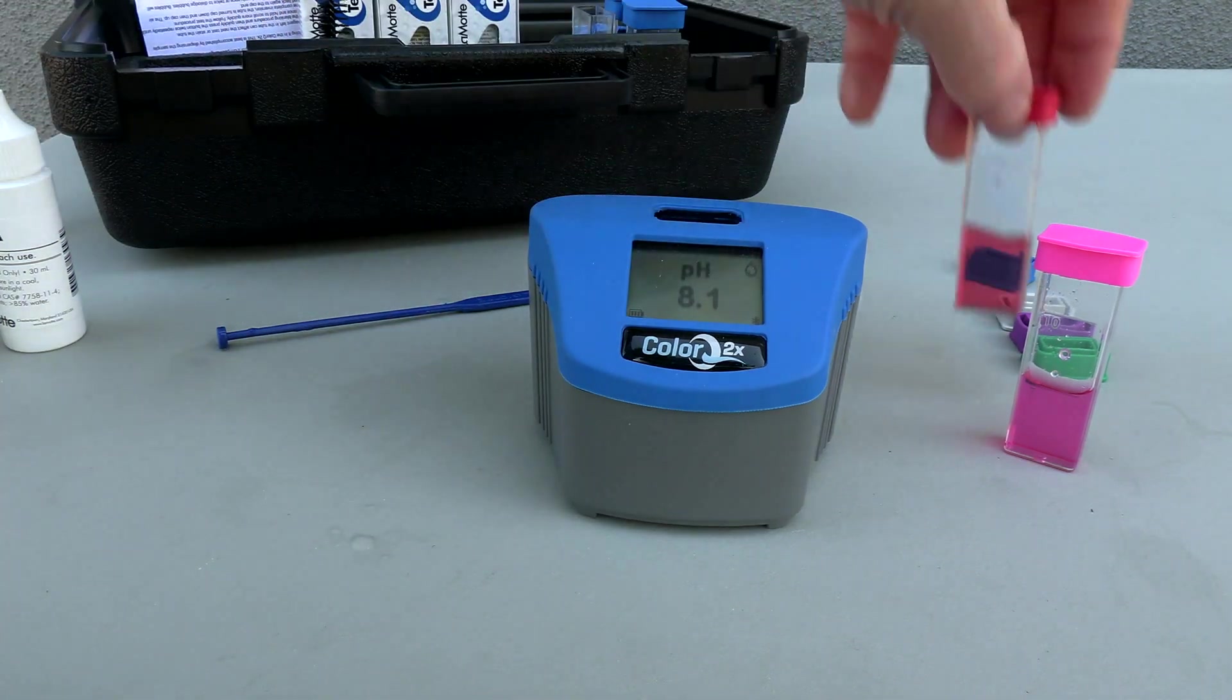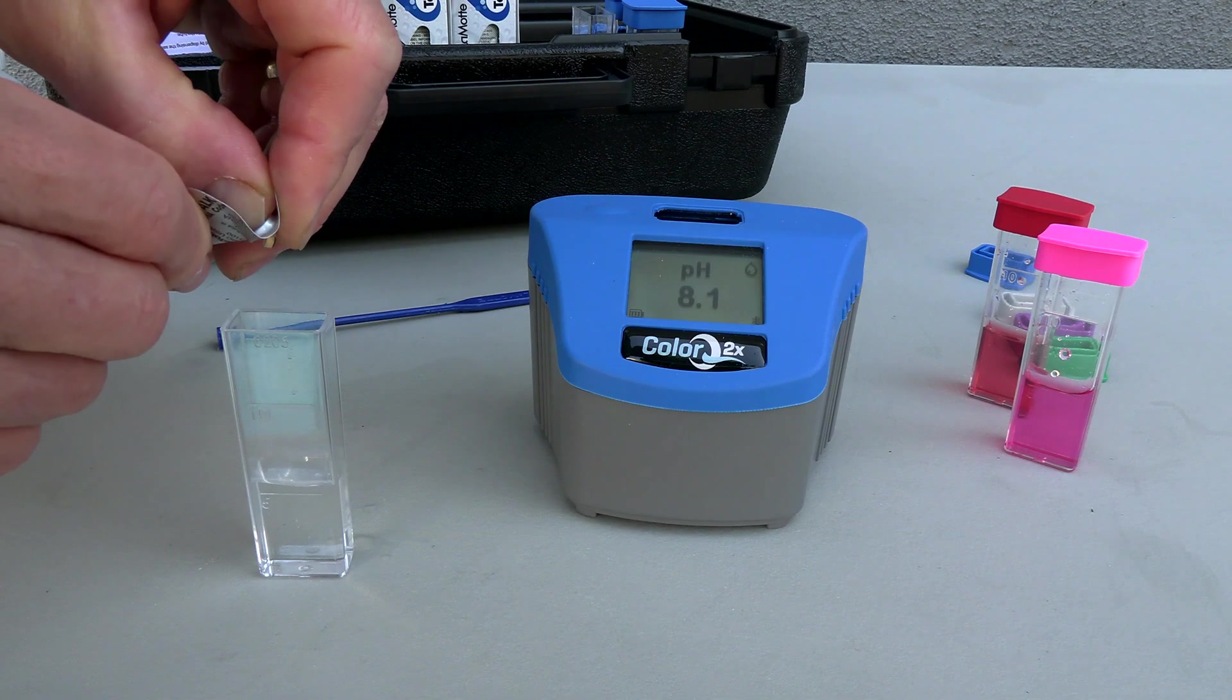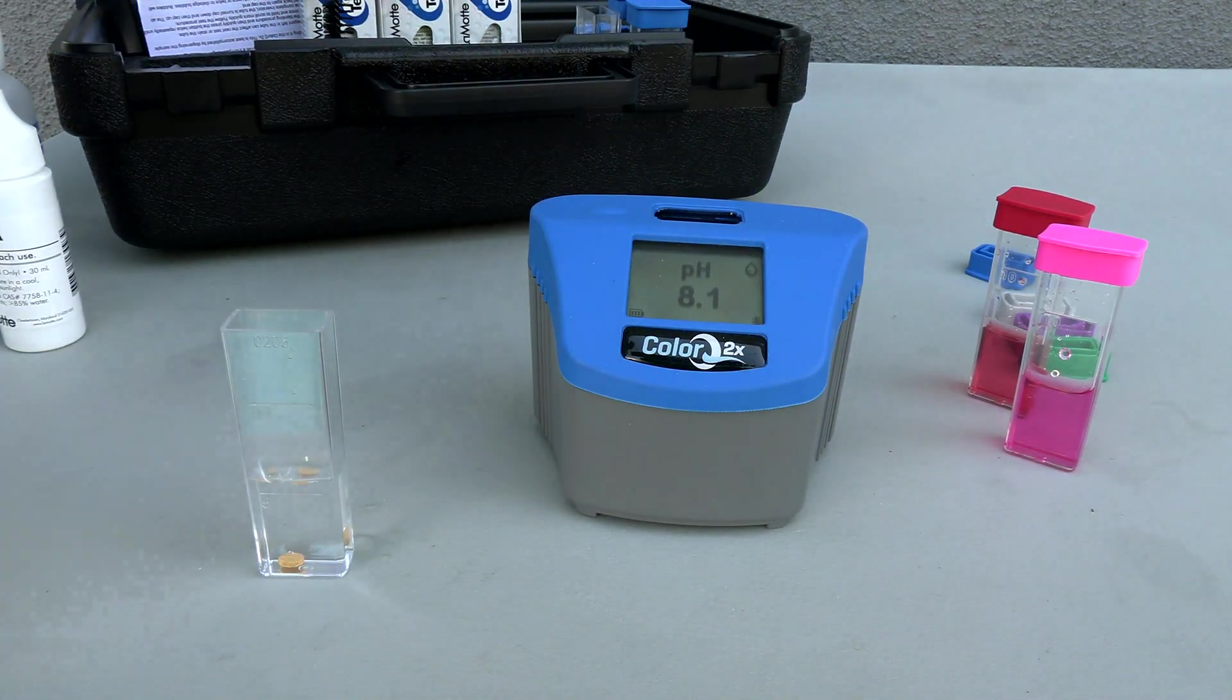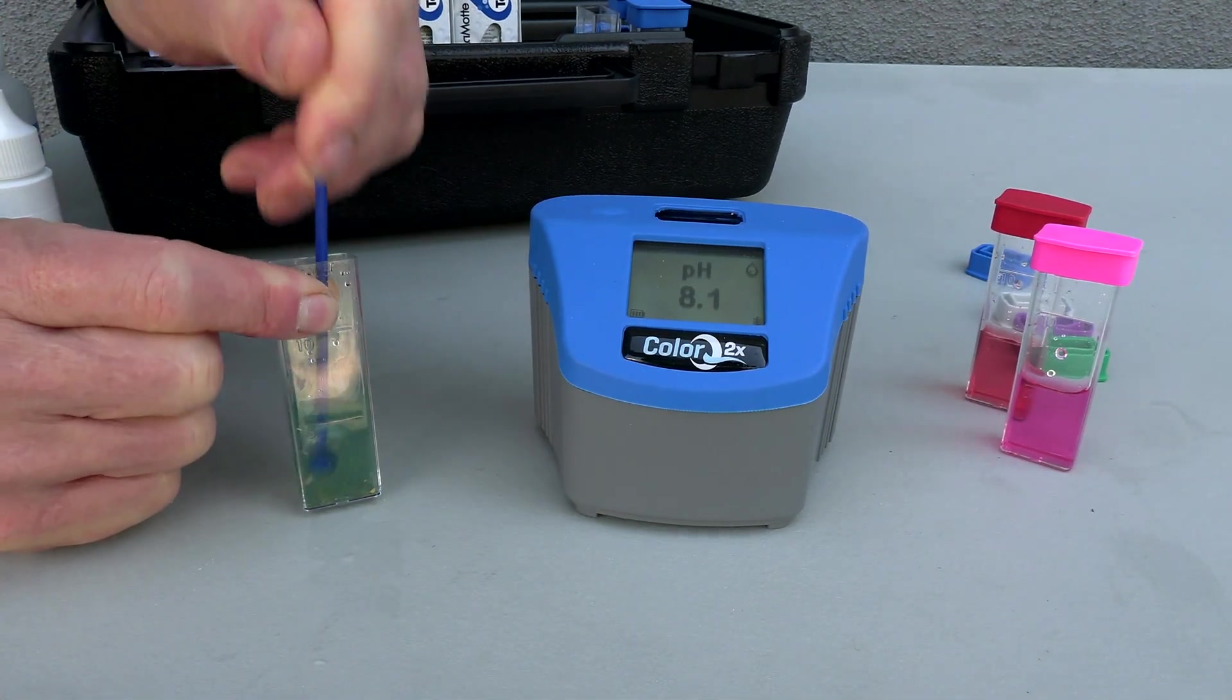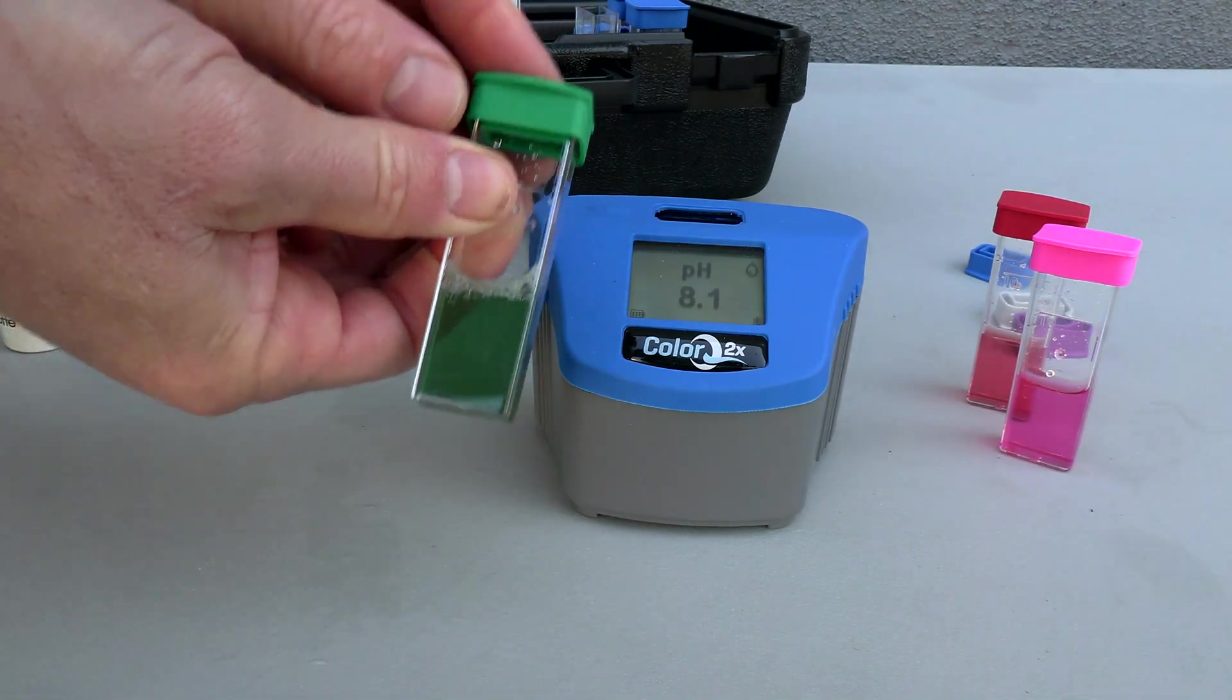For the alkalinity we're going to use these test tabs and carefully drop one in the tube. Now you'll take this crusher and crush up the tablet. You'll take the green cap and put it on. The alkalinity here is at 88.